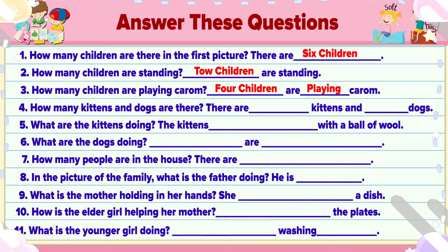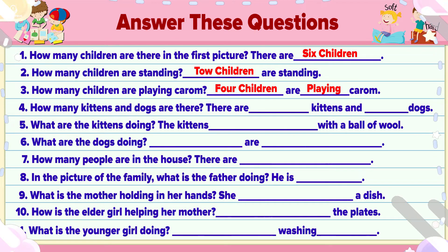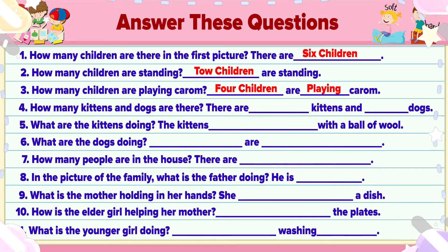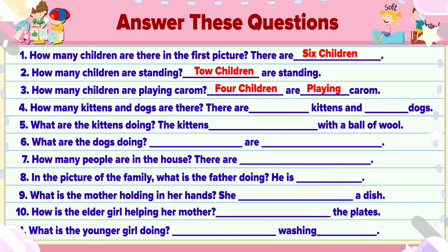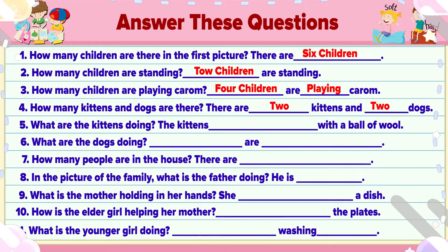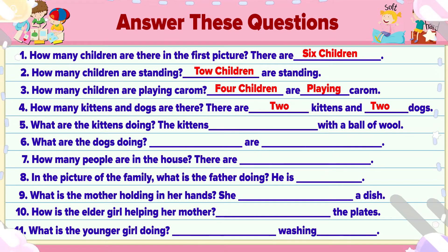How many kittens and dogs are there? There are two kittens and two dogs.